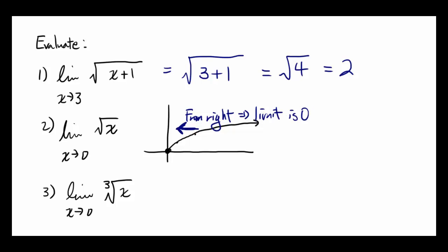But what's happening from the left? Since the square root function is not defined from the left or for negative values, you do not know what's happening as you're getting closer and closer to 0 from the left. And in those cases, if the limit from the right is defined but the left is not, we say the limit does not exist.